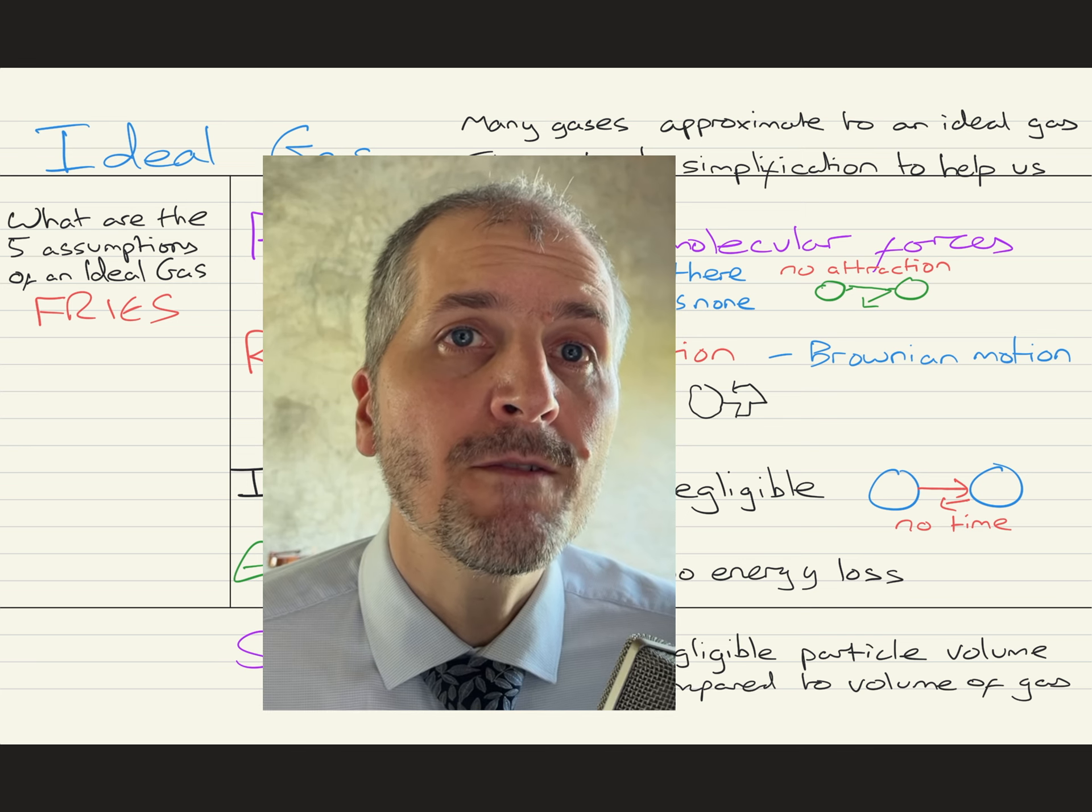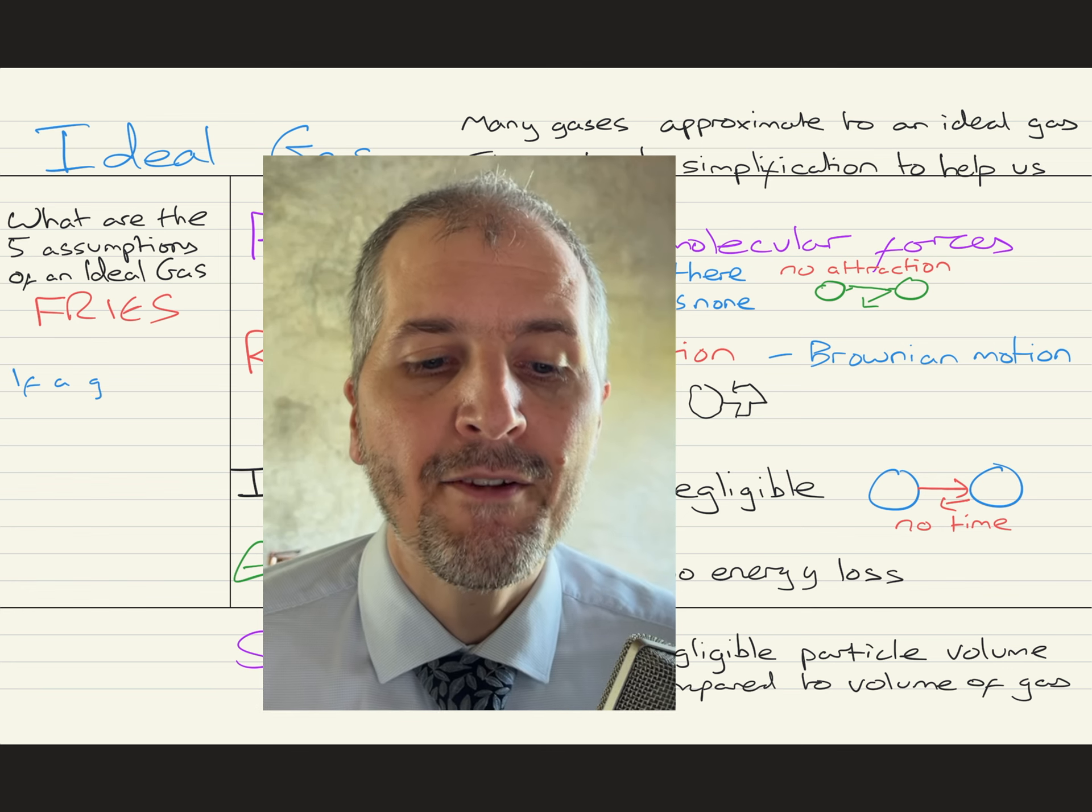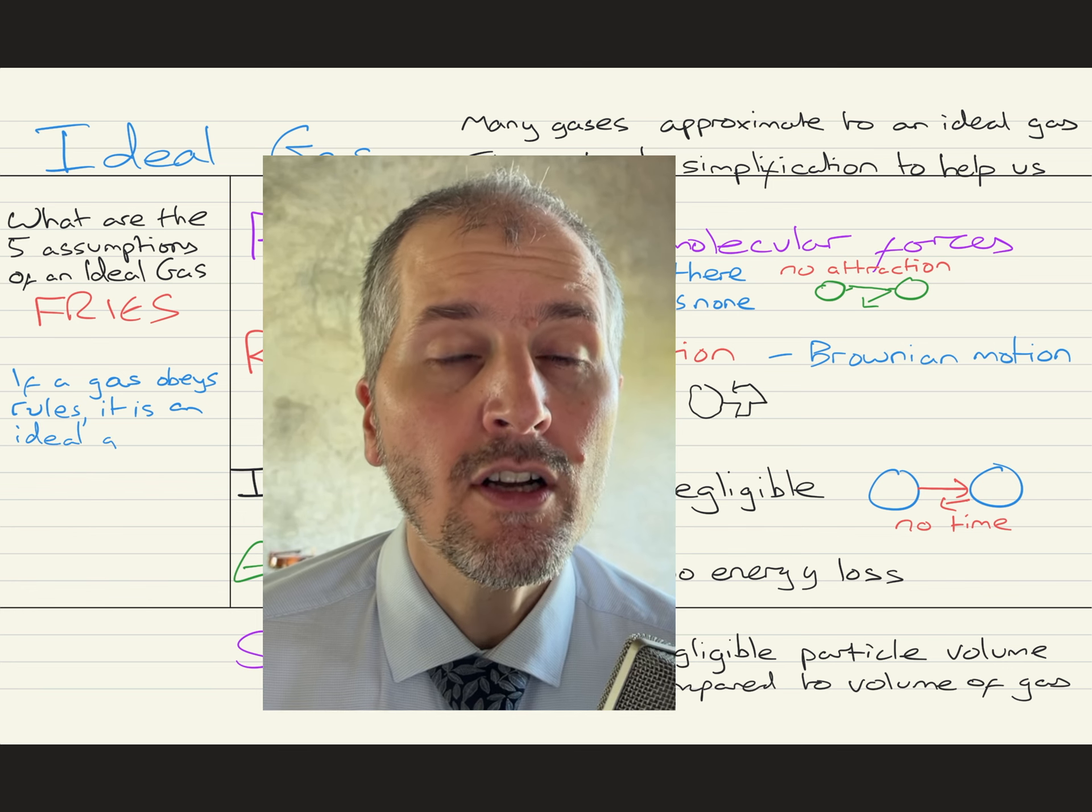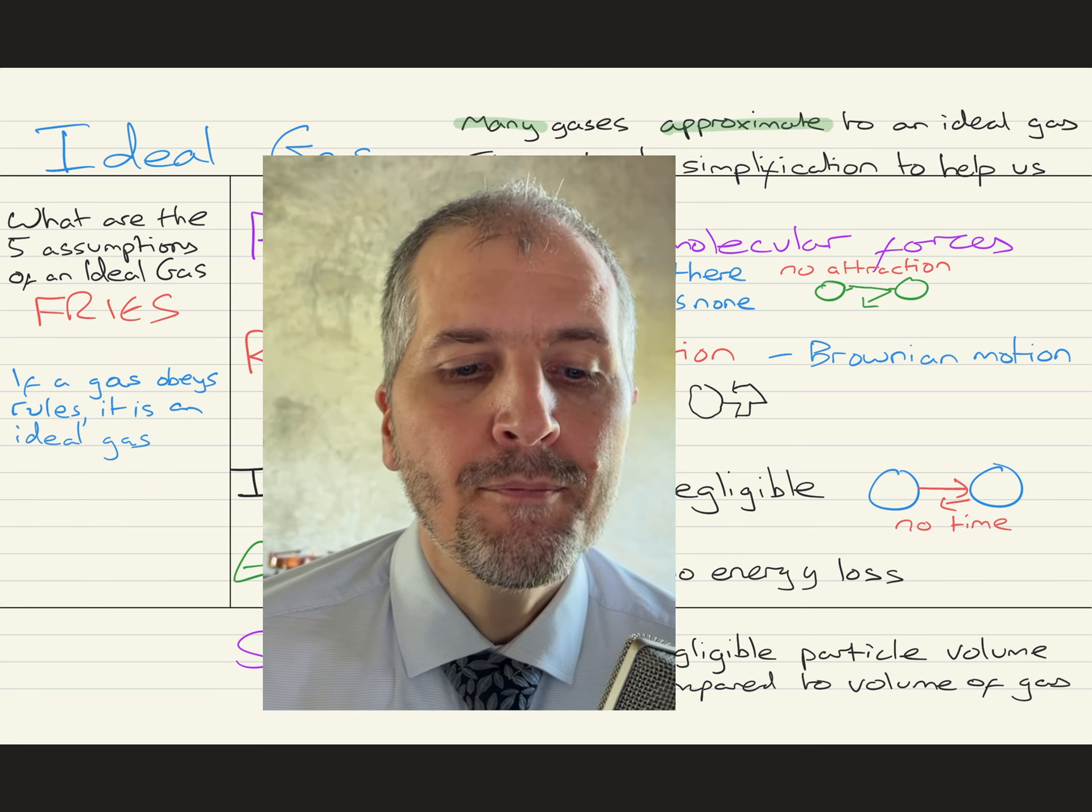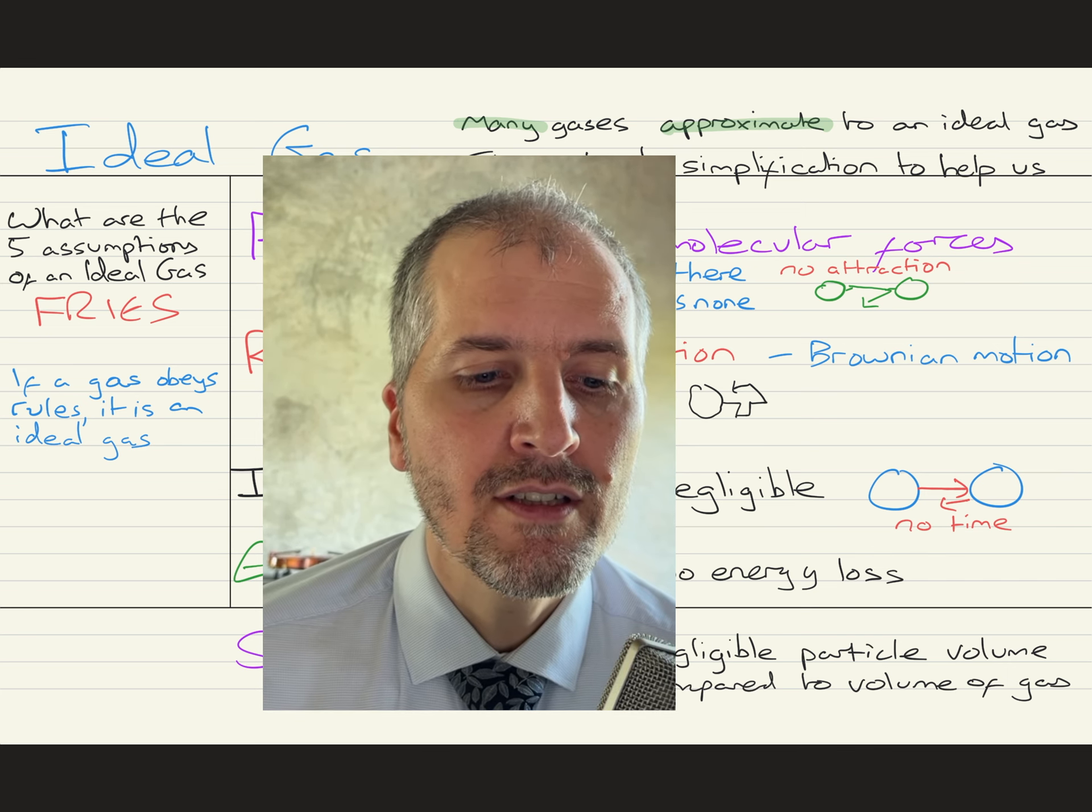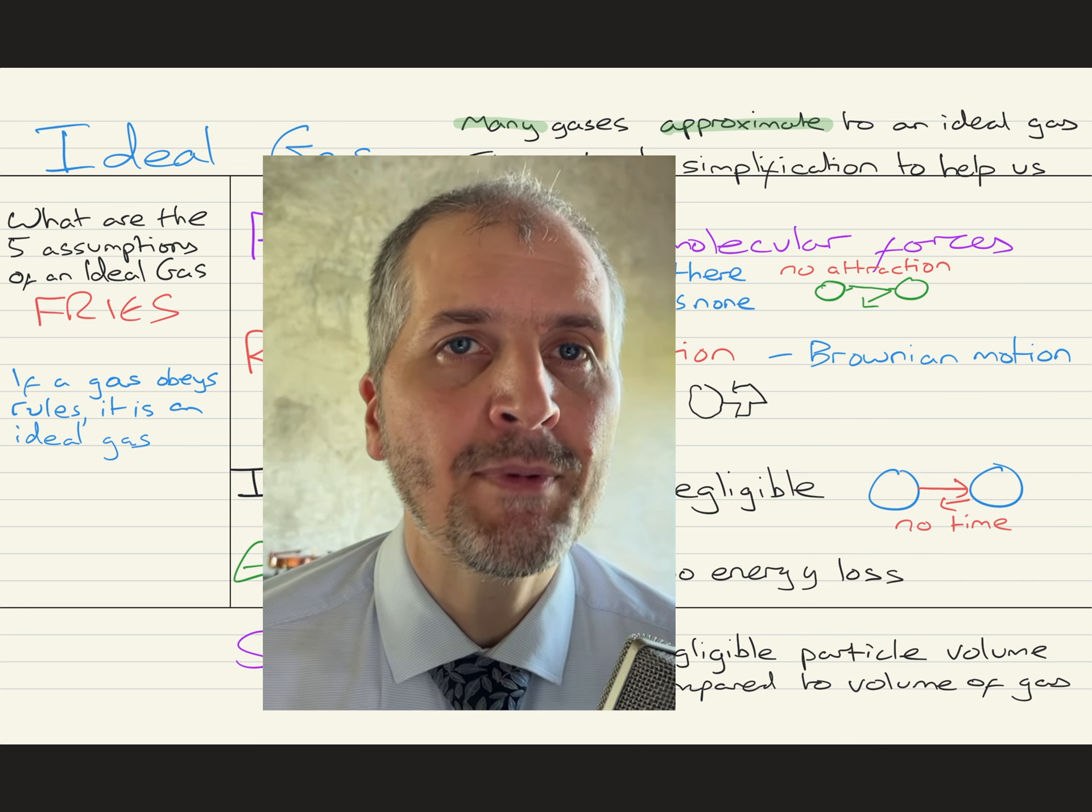So those rules of fries are for an ideal gas. All that means that if you have a gas and it obeys these rules, then it is an ideal gas. If we have a gas and it does not obey all those rules, then it's not an ideal gas. Many gases are pretty close to following these rules. So the formulas and things we're going to look at next, those formulas that only truly work for ideal gases, they are going to be useful for us.